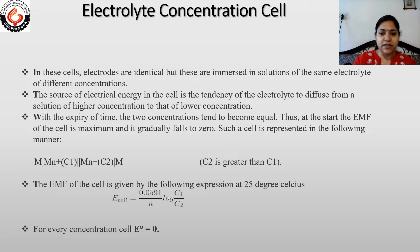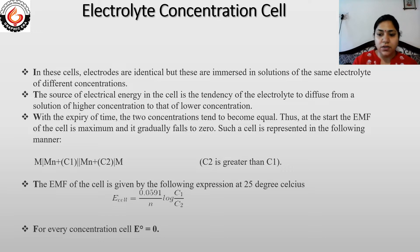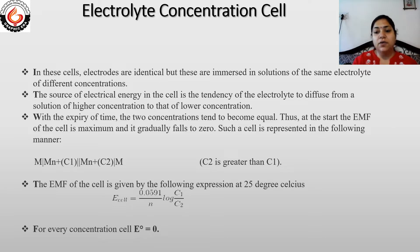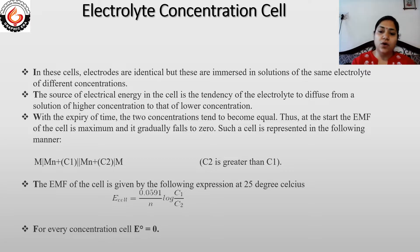Electrolyte concentration cells. In these cells, electrodes are identical but are immersed in solutions of the same electrolyte at different concentrations. Both half cells have the same electrodes and the same electrolyte solution — for example, zinc in zinc sulfate — but the concentration of the zinc sulfate solution differs between the two half cells. The cell works because of the general tendency of electrolyte to diffuse from higher concentration to lower concentration, and by this way it generates electricity.